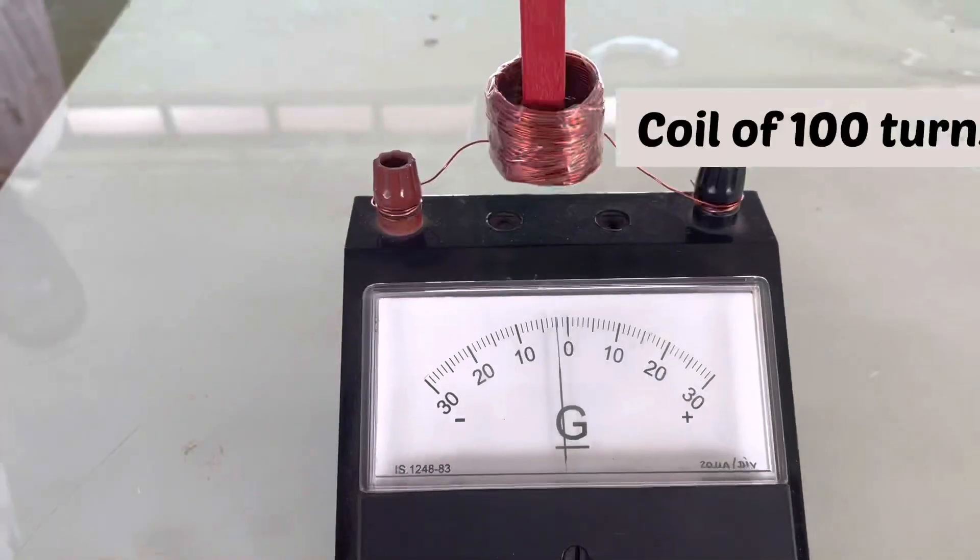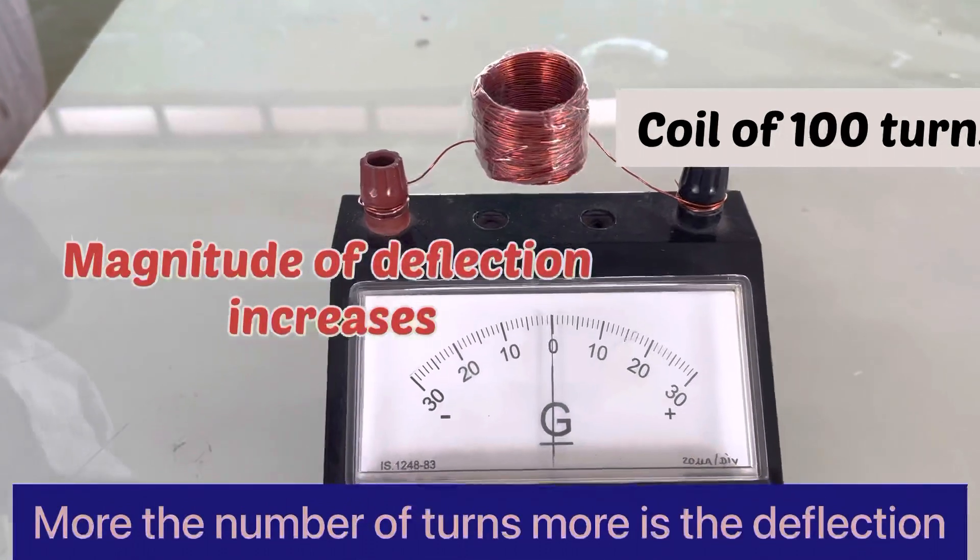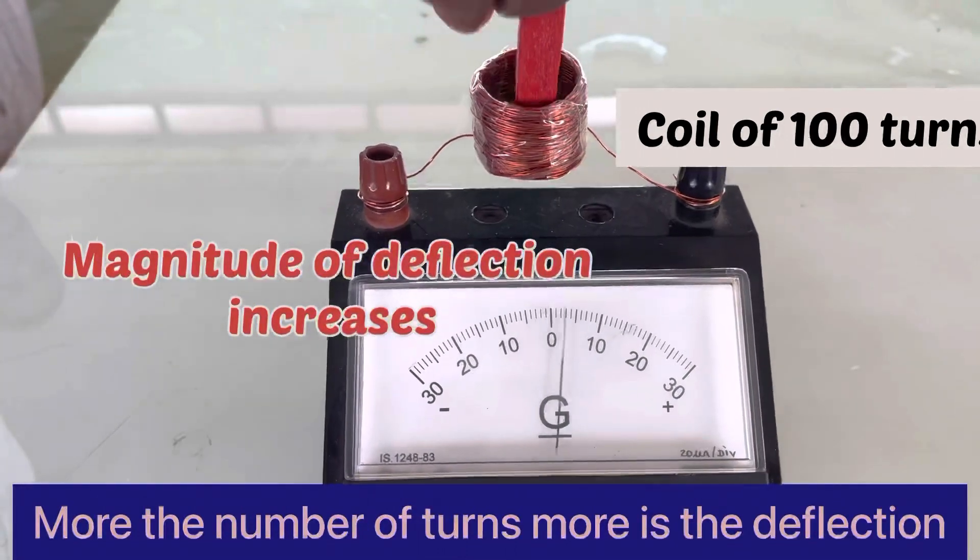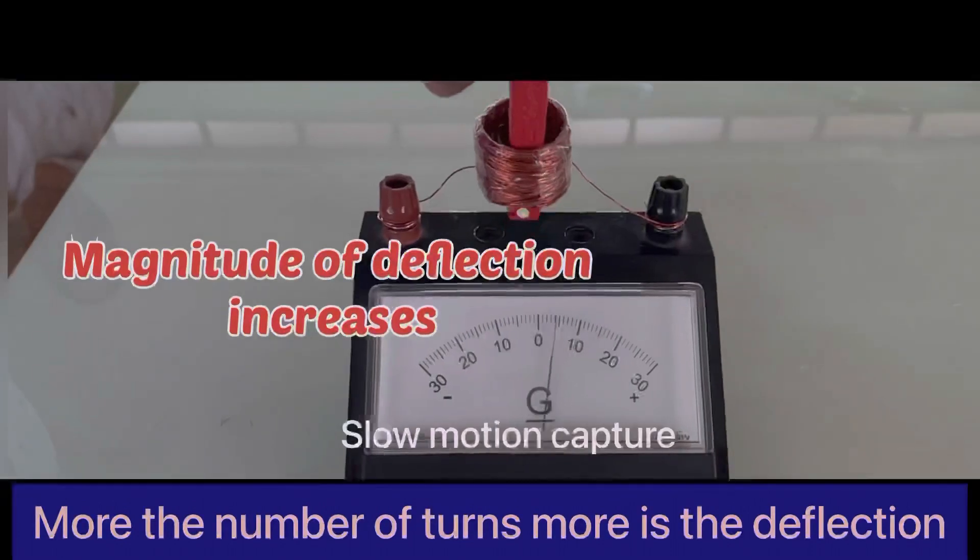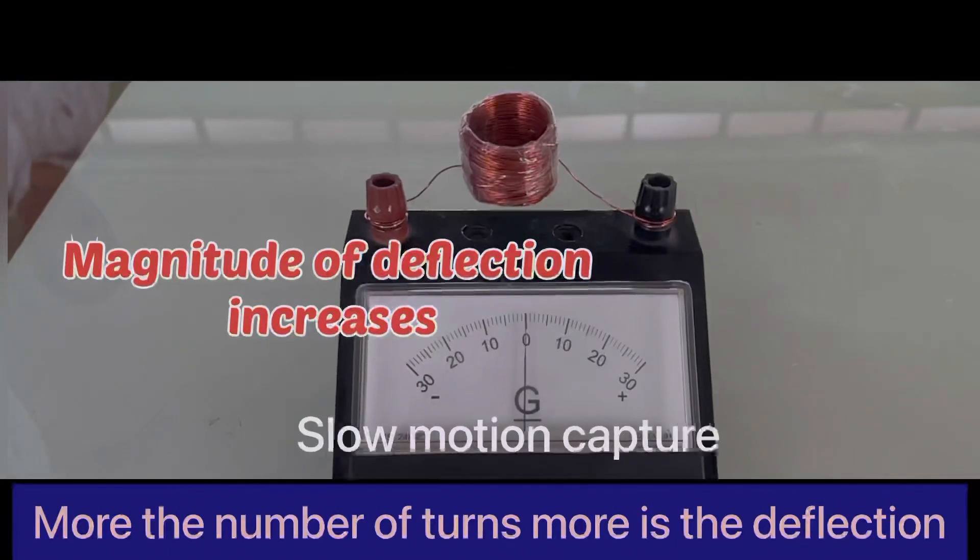When the number of turns is doubled and with the same bar magnet experiment is conducted, we observe that the magnitude of deflection increases. More the number of turns, more is the deflection.